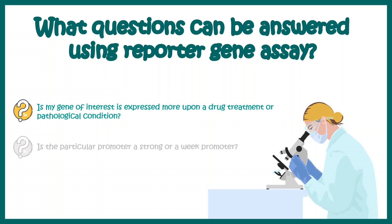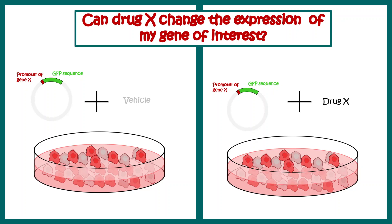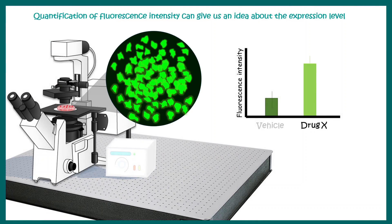We can also ask whether a gene of interest is expressed more or less under a pathological condition. Here, we transfect our cell line with the reporter construct to visualize the transcription of gene X and understand how its promoter is activated. The cell cultures are subdivided into two groups: one treated with vehicle and another with vehicle plus drug. We then analyze and plot fluorescence intensity. In this hypothetical situation, drug X leads to increased transcription of gene X because the fluorescence intensity is higher than in the vehicle-treated condition, giving us an instant readout of gene expression under a pharmacological situation.